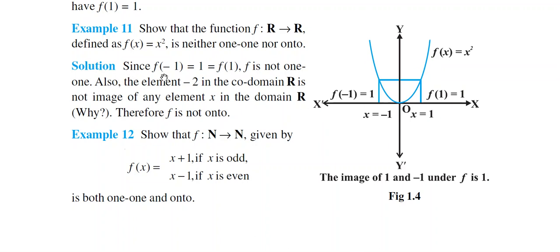As written here: since f(−1) = 1 and that is also equal to f(1), f is not one-one — it is many-one. Also, the element −2 in the co-domain R is not the image of any element x in the domain R. Here the R written refers to the domain.